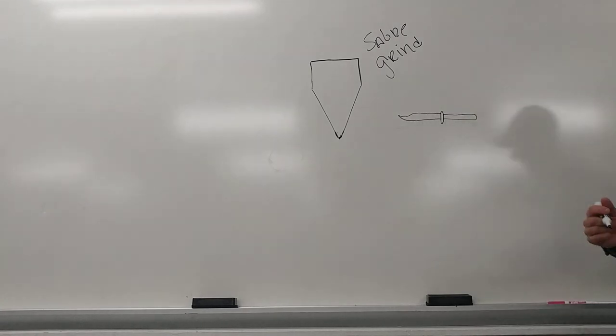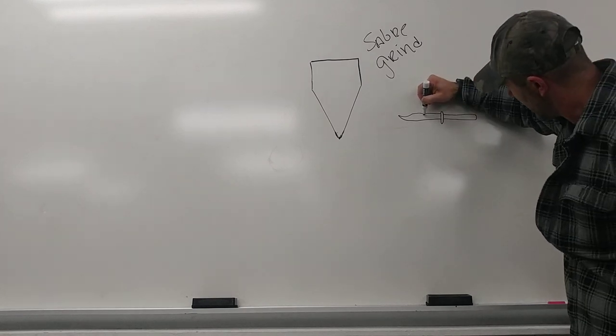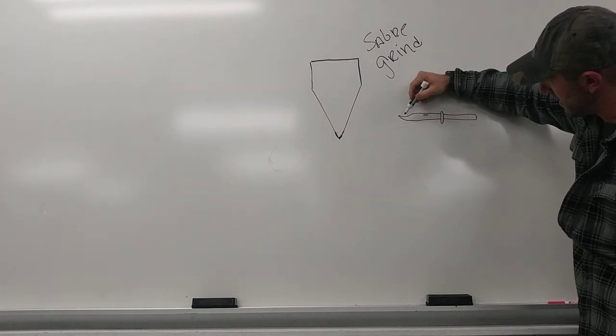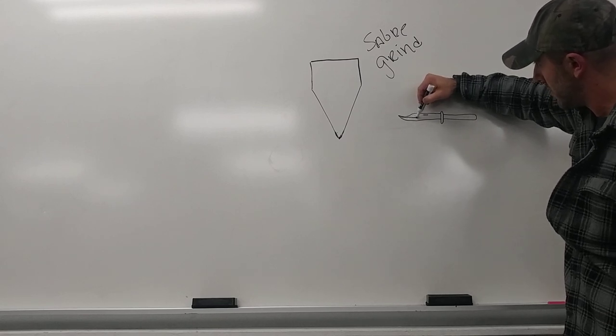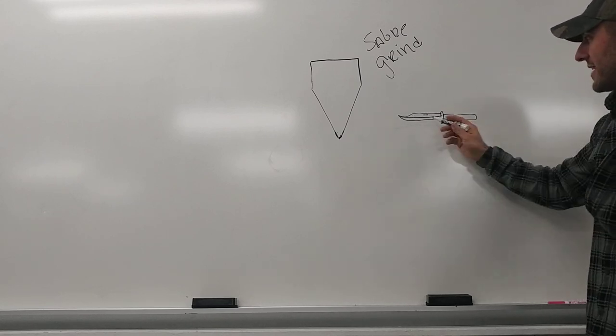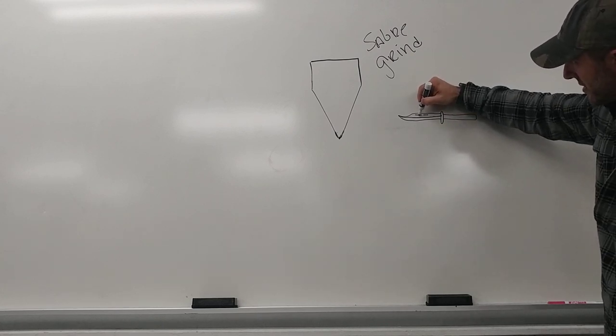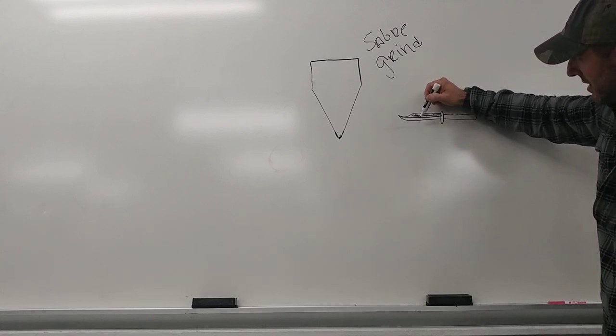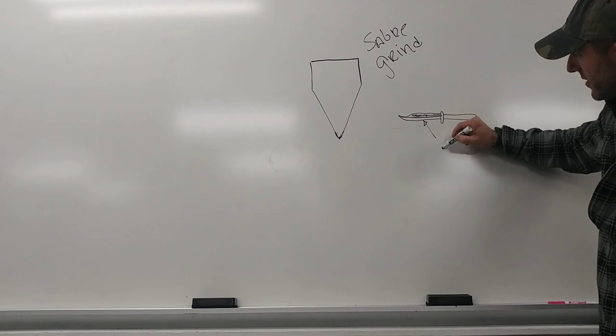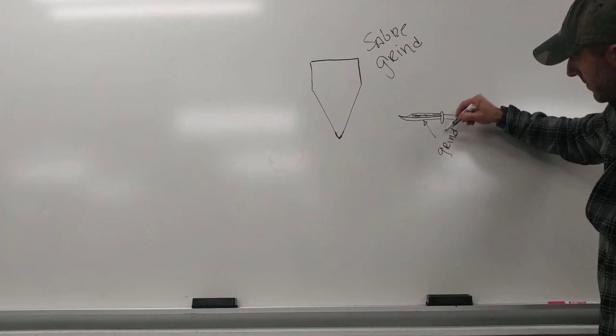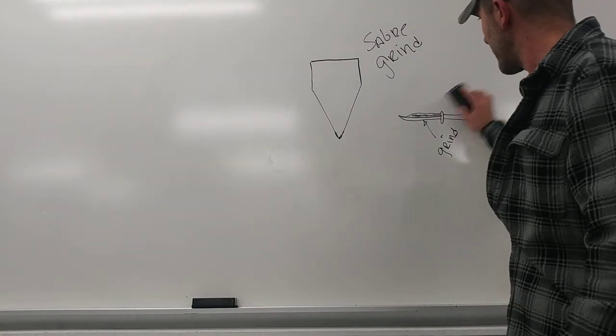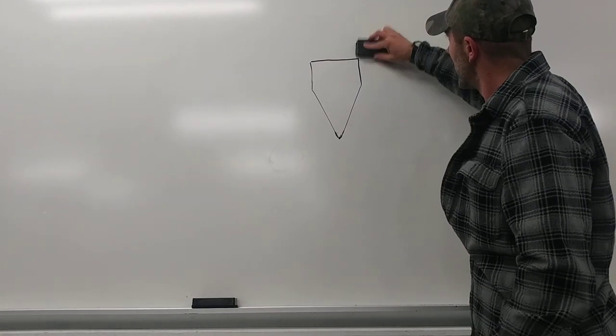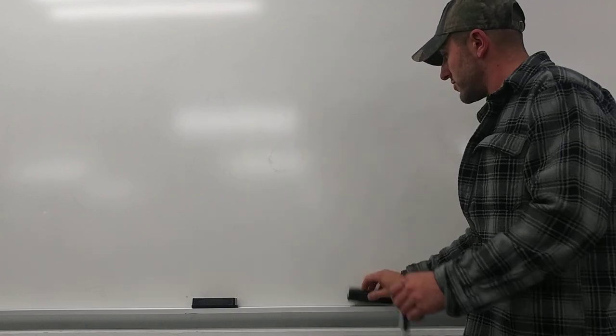Sort of looks a little bit like a Buck 119, and then we have our folder right here. With these Sabre grinds, a lot of times we have this right here. It has that look. So it's stock thickness—this here is all stock thickness—and this here is where the grind begins. In this instance, our grind is the flat grind.